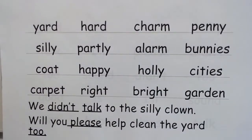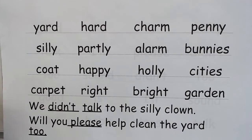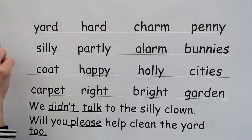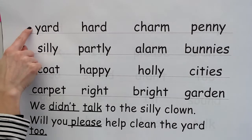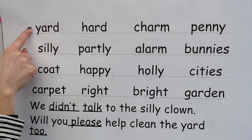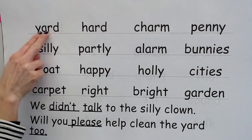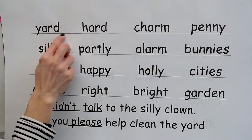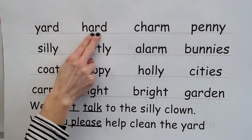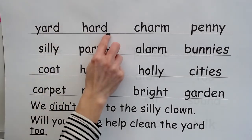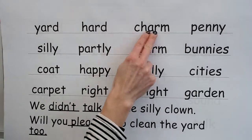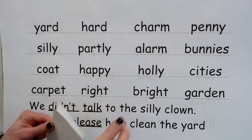All right, once again we are going to be reading some words. First, we will say a sound for a sound spelling, then we will read a word. When my finger's to the left, think of these sounds and words. Get ready: sound — R, word — yard; sound — R, word — hard; sound — R, word — charm.